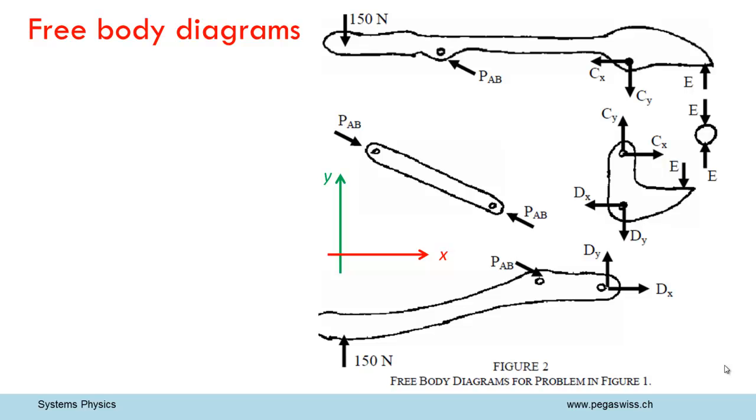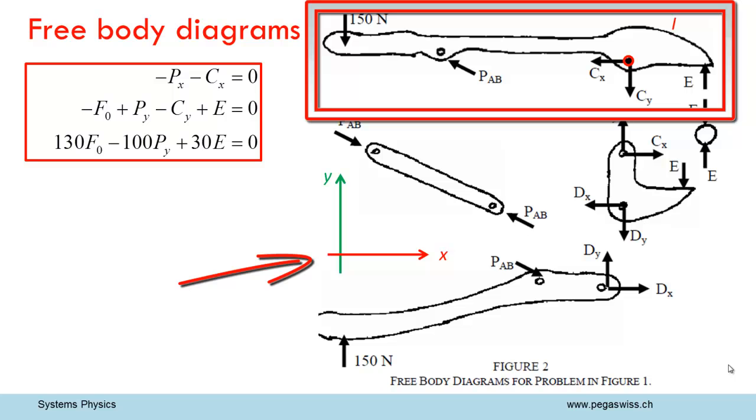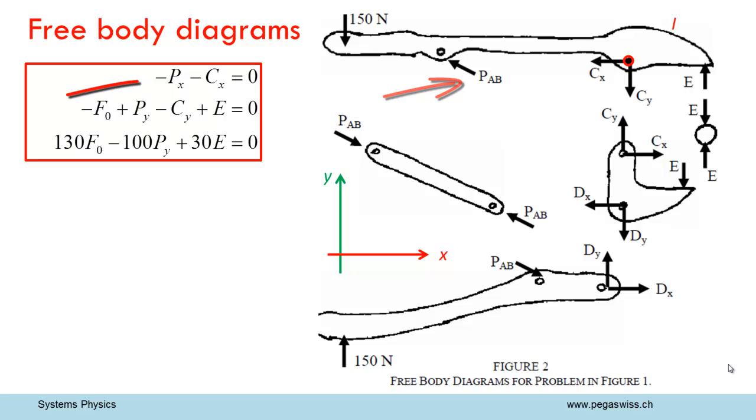Now we can formulate the equilibrium condition for each body. We shall take the first system and argue in relation to this coordinate system. The x-component of force P acts in negative direction, so we enter minus Px in the corresponding equation. At point C, there is another force acting against the x-axis, so we enter minus Cx. Since there are no other forces acting in this direction, the sum of both forces must amount to zero. Here you can see that Cx was probably entered with the wrong sign, but this doesn't matter, because if we continue consistently in this way, the sign will turn out right in the end.